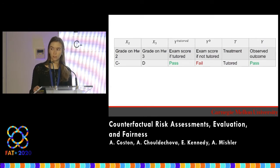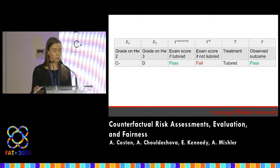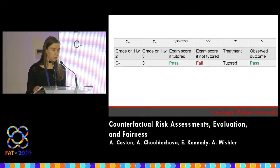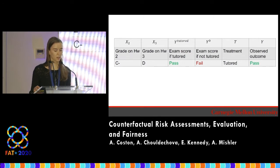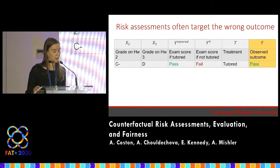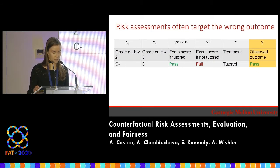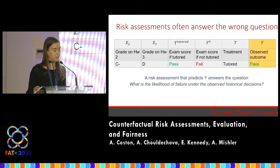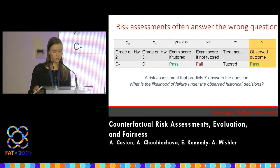We never observe both potential outcomes. Instead, each student is either tutored or not tutored, and we observe the corresponding potential outcome. So this student was tutored, and then we observe that they pass. This observed outcome is commonly the target of risk assessments, and that tells us the likelihood of failure under the observed historical decisions.